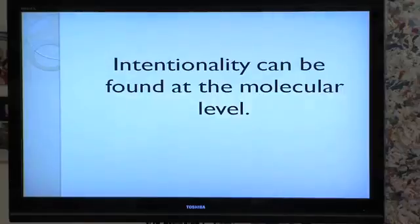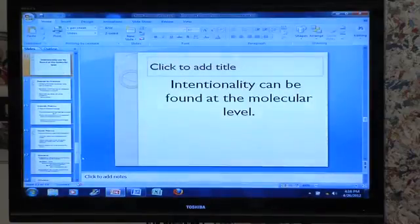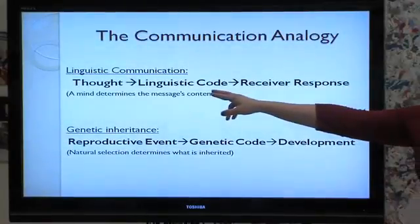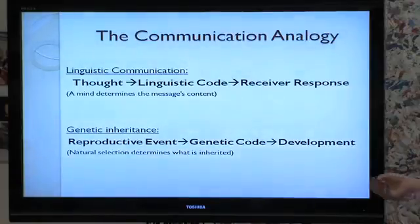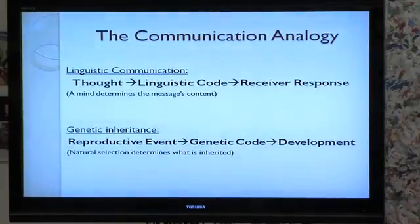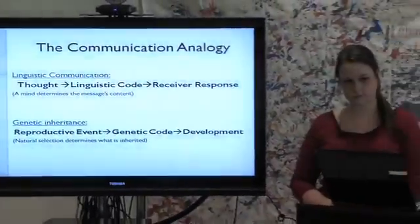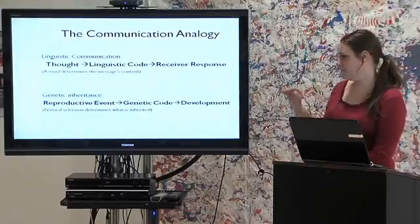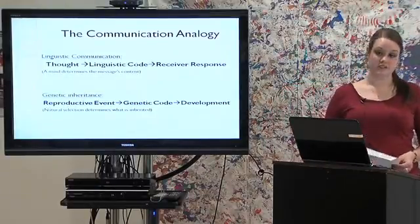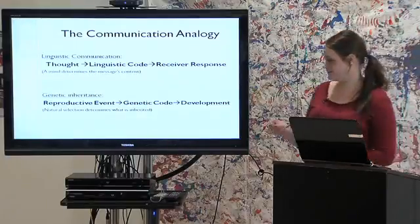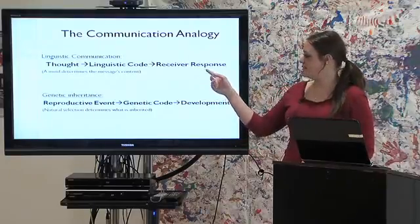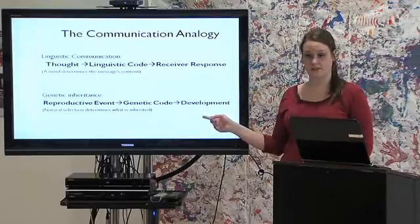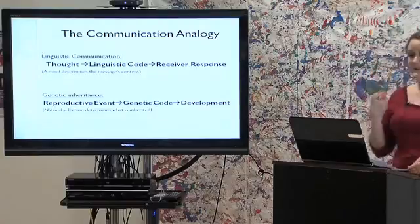Shea sets up a picture where there's a linguistic code — like written or spoken language — and the genetic code, which is the sequence of base pairs in a DNA molecule. They're produced by systems. The linguistic code is produced by a mind: you have a thought and express it through language. The genetic inheritance system is produced by natural selection, which determines which semantic tokens — which particular genes — are inherited. The receiver system is either a person receiving the message or the developmental system receiving the message.